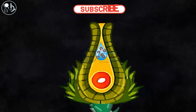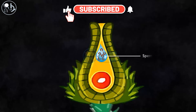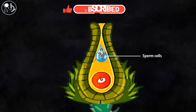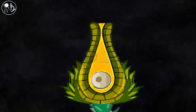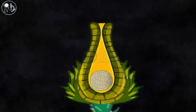Once the sperm comes to the vicinity of the egg, one sperm cell swims towards the egg and eventually fertilizes it. The fertilization results in a diploid zygote, which then divides by mitosis to become a multicellular sporophyte.